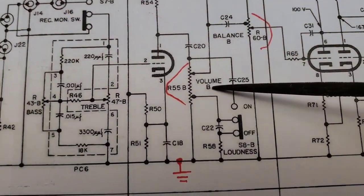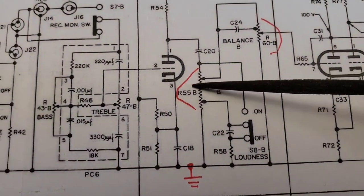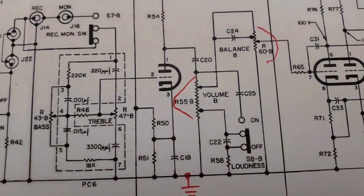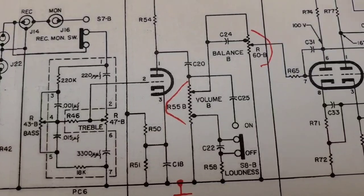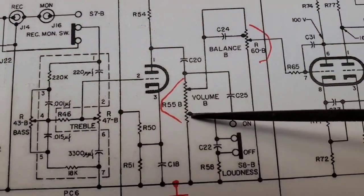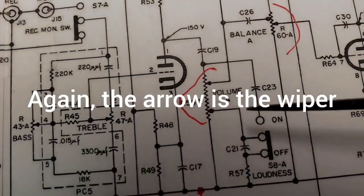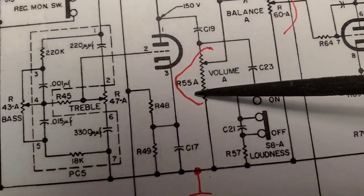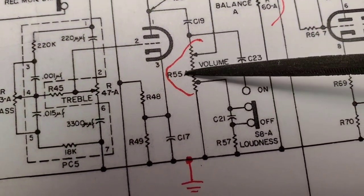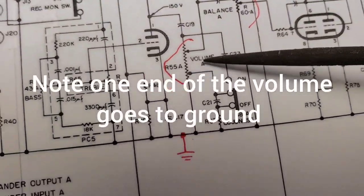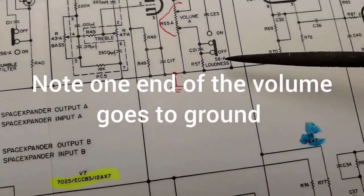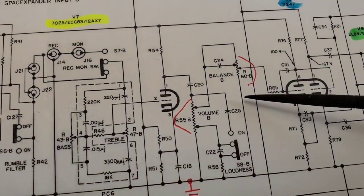Up here, see it says volume B, R55B. That's the two-section volume control. This is the B section. And here's the A section. R55, that's your two channels. They're linked together. So when you turn the control, both channels, the volume goes up and down together. We all know this. That's what that is.